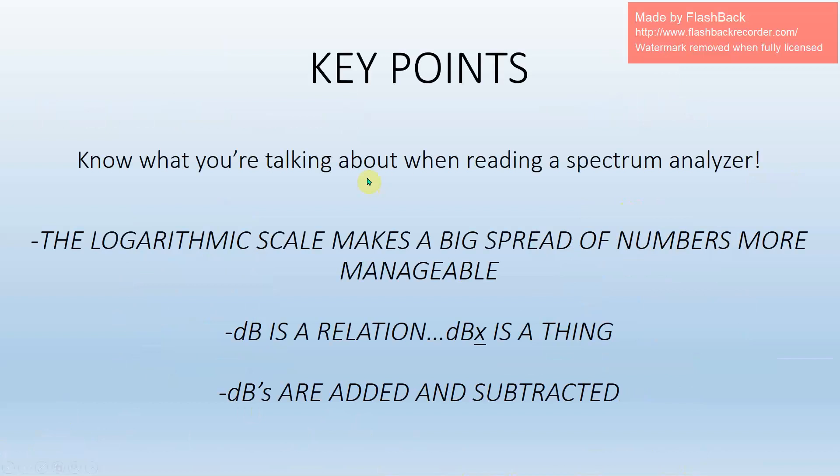So the takeaways here. Know what you're talking about when you read a spectrum analyzer. It gives you credibility. The logarithmic scale makes a big spread of numbers more manageable. So just remember that picture of the Earth compared to the sun. Nobody wants to remember 1.3 million. You'd rather just say plus 60 dB because that's easier to communicate. A dB is a relation. If there's three letters, the dBX is a thing. And when you do convert to dBs, these are added and subtracted together. Clear as mud. Good job. See ya.